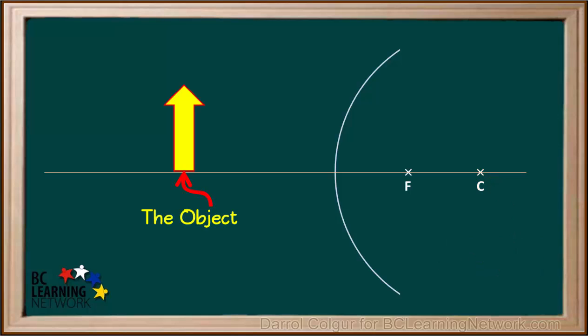Here is the object we'll use in this example. It is a yellow arrow, in which the top is a point and the bottom is sitting on the principal axis. We'll start by drawing a straight line from the top of the object to the surface of the mirror, like this.